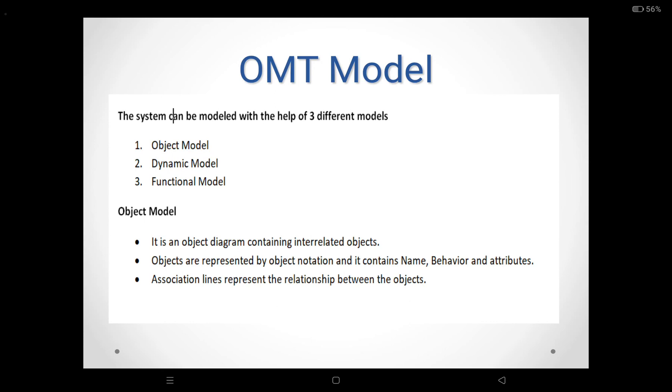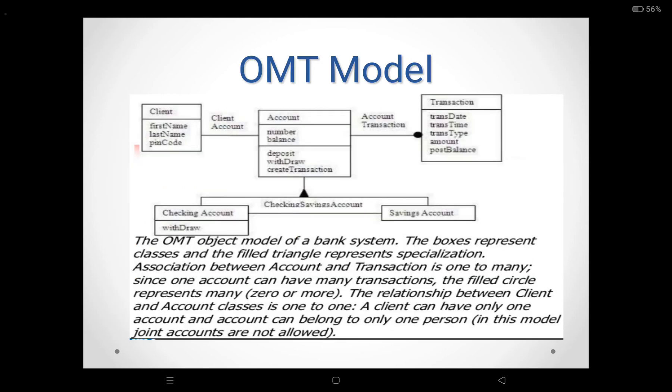The object model is nothing but the object diagram. It shows the relationship between the objects. Objects are represented by object notation, which consists of the name of the object, its attributes, and its responsibilities or member functions. Association lines represent the relationship between objects. In the example of the object model of a bank system, the boxes represent the classes. The filled triangle represents specialization. The association between account and transaction is one to many, since one account can have many transactions. The filled circle represents zero or more. The relationship between the client and account classes is one to one — a client can have only one account, and an account can belong to only one person.